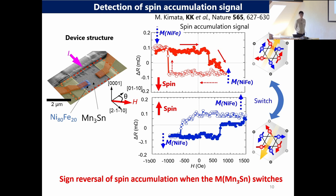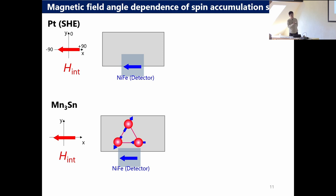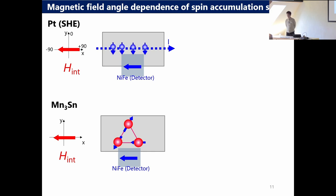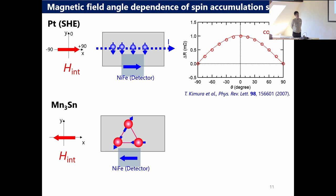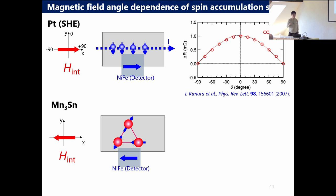After that, we apply a large magnetic field for the switching of the Mn3Sn state shown here. In that case, we observe the opposite sign of the hysteresis loop in this configuration. It means the sign of the accumulated spin is opposite compared to the first and second cases. So from this experiment, we found the sign change of the accumulated spin by changing the magnetization of Mn3Sn. This is a very unique property compared to the typical spin Hall effect, because in the typical spin Hall effect, the sign of the spin is always fixed.